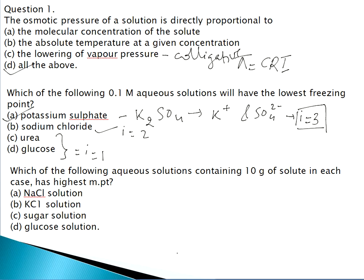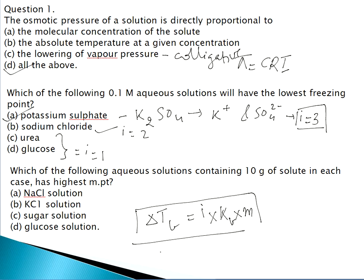Question 3: Which aqueous solution containing 10 grams of solute has the highest melting point? The formula is ΔTb = i·Kb·m for boiling point elevation. NaCl has high concentration and gives 2 ions on dissociation, so it has the highest boiling point elevation. However, since the question asks for melting point, the sugar solution is the answer, because its ΔTf value decreases less, meaning its melting point will be higher.